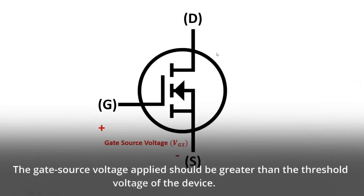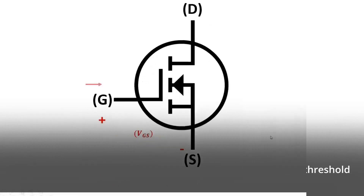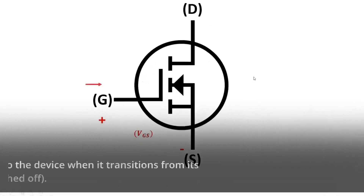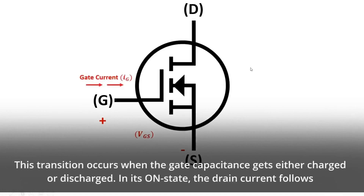The gate source voltage applied should be greater than the threshold voltage of the device. The gate current flows into the device when it transitions from its on-state, i.e. switched on, to its off-state, i.e. switched off. This transition occurs when the gate capacitance gets either charged or discharged.